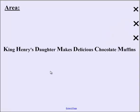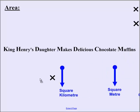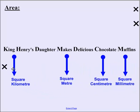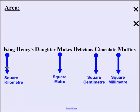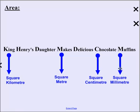In the previous lesson we had a look at King Henry's daughter makes delicious chocolate muffins, as a little way to remember how to deal with these conversions. So we're going to bring it in, and we're going to use the same thing, so the K stands for kilometres, M stands for metres, C for centimetres, and M for millimetres. However, now we're going to be talking about units of area, so they're square centimetres, square metres, square kilometres, and square millimetres.